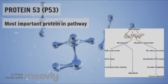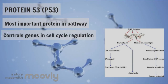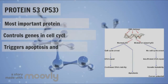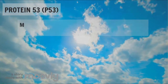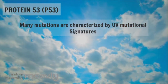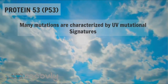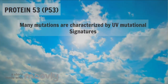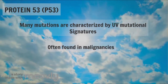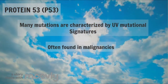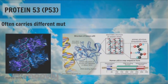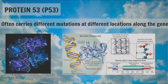p53 is a transcription factor responsible for controlling genes involved in cell cycle regulation, triggering apoptosis, and DNA repair. In skin cancer, many mutations in p53 are characterized by the UV mutational signature. Mutations in p53 are often found in many malignancies, suggesting its involvement in aberrant signaling pathways and subsequent DNA damage. However, in skin cancer, each p53 allele often carries different mutations at different locations along the gene.